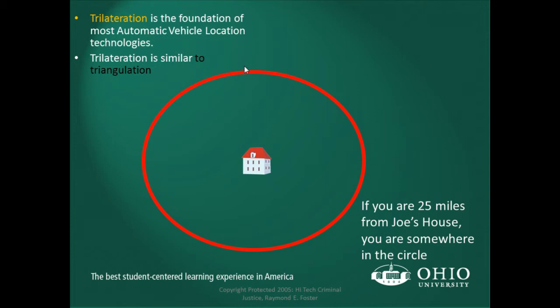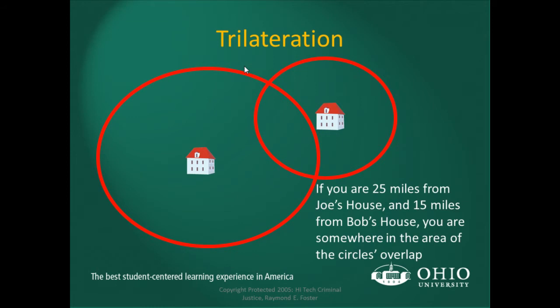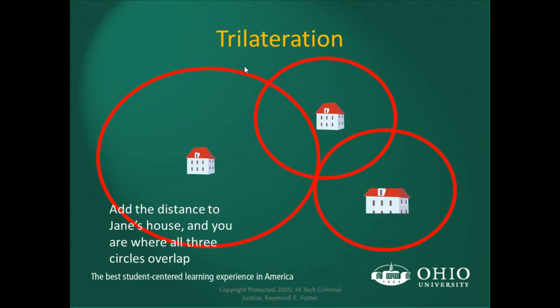The process used to determine location is called trilateration — it is the foundation of most AVL systems. Trilateration is very similar to triangulation. If you are 25 miles from Joe's house, you are somewhere on that circle. If you add a second point — 15 miles from Bob's house — you are at one of two points where those circles overlap. Adding a third distance from Jane's house lets us pinpoint your exact location by the intersection of all three circles. That is how trilateration works.